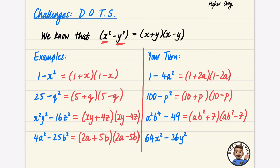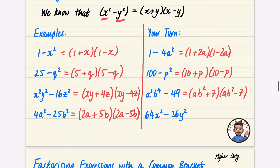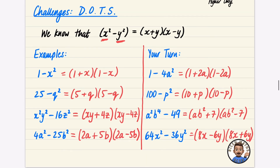For 64x squared minus 36y squared: the square root of 64x squared is 8x and the square root of 36y squared is 6y, giving (8x+6y)(8x−6y). However, this is not fully factorized — there is a common factor of 2 in each bracket that could be taken out. For now we'll leave it as factorized using the difference of two squares, but note it is not fully factorized.